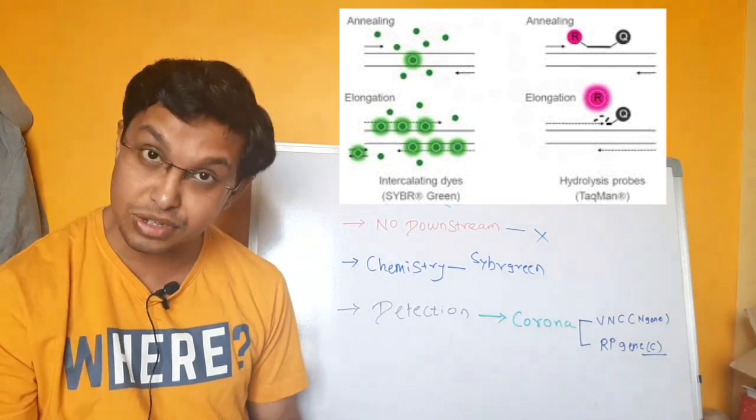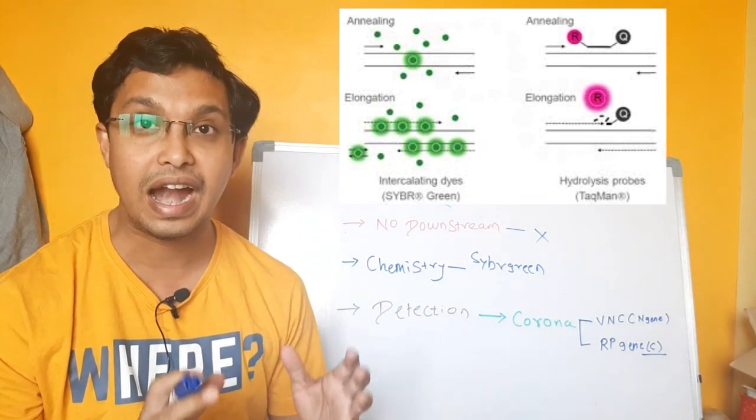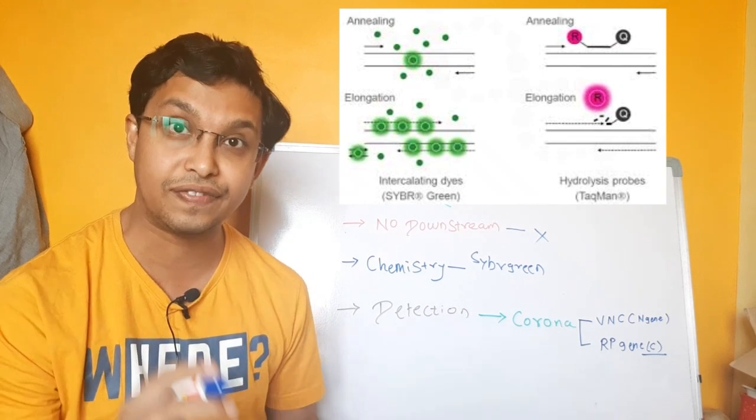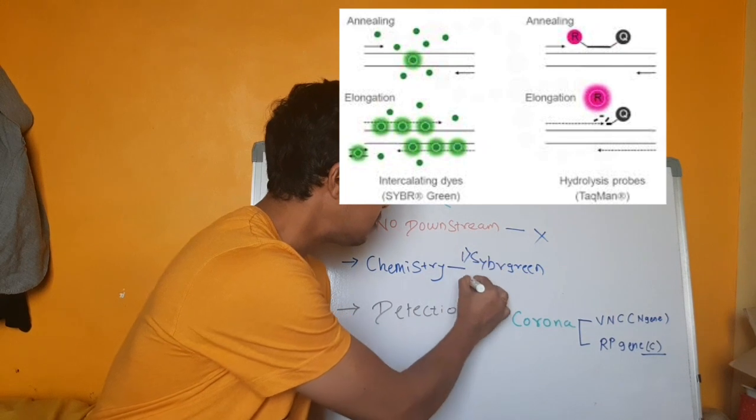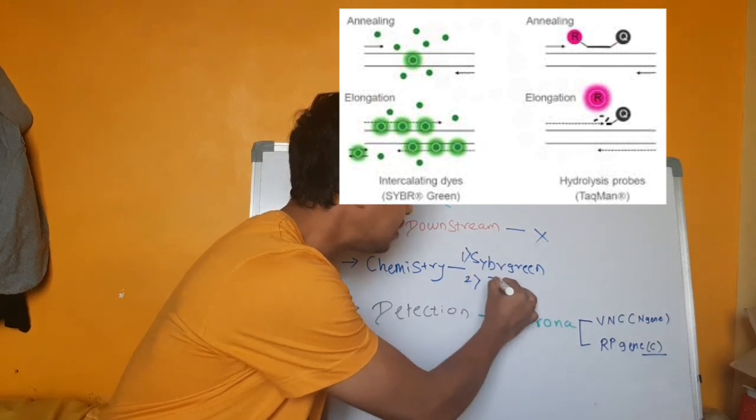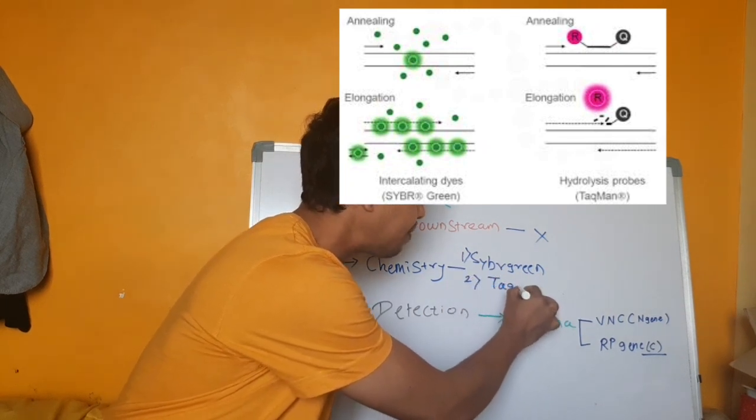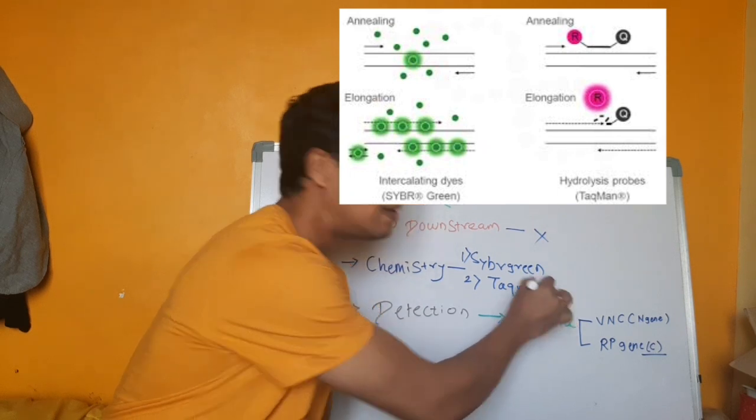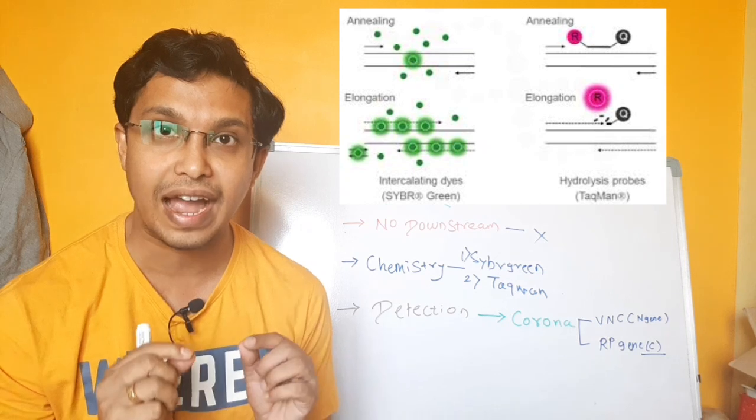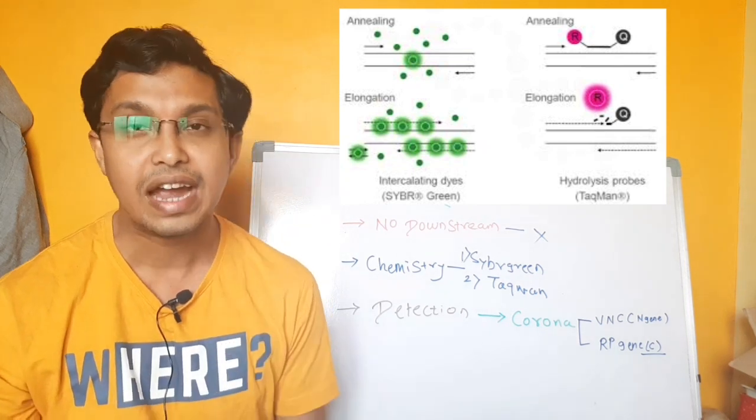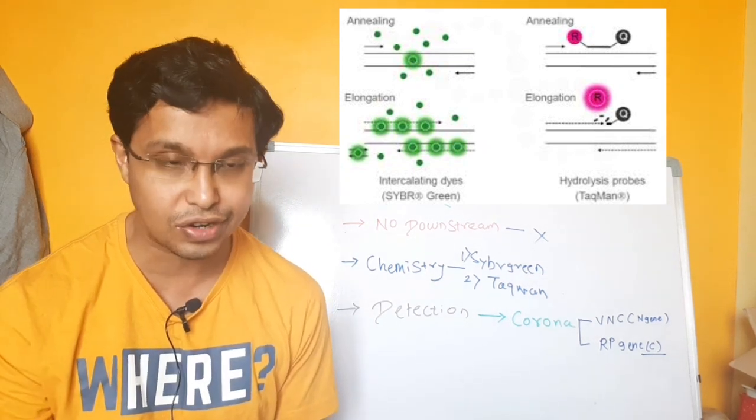The second chemistry, which is very important and very efficient but expensive and costly, is Taqman probe chemistry. This Taqman probe chemistry is extensively used for point detection, and we will talk about how that works.